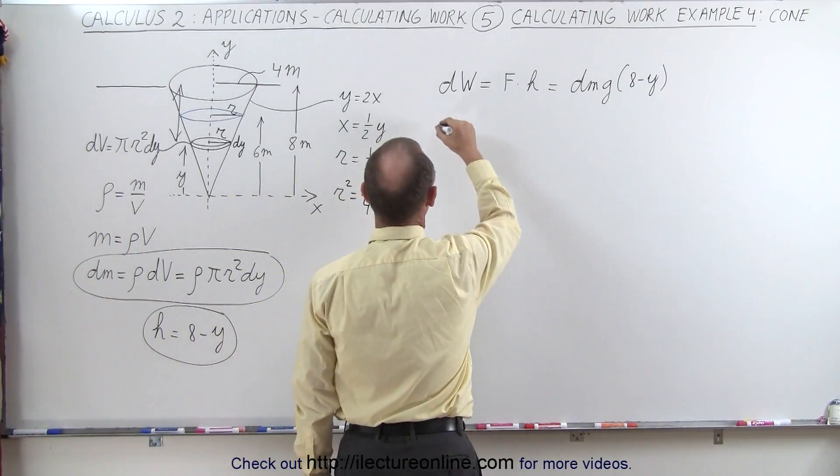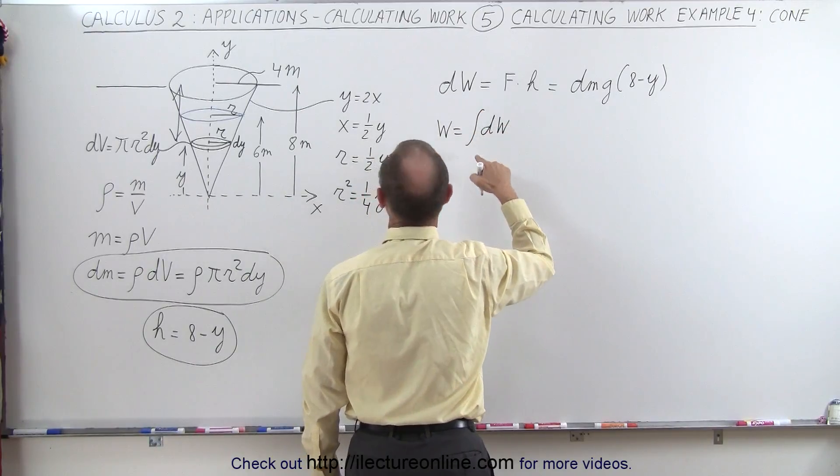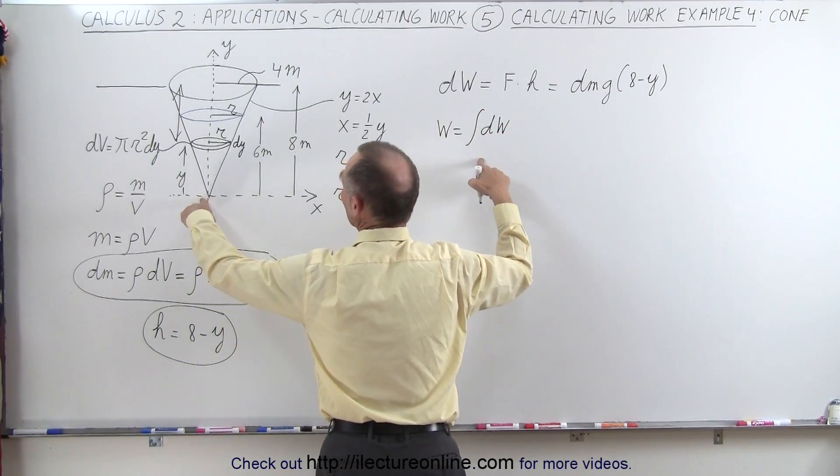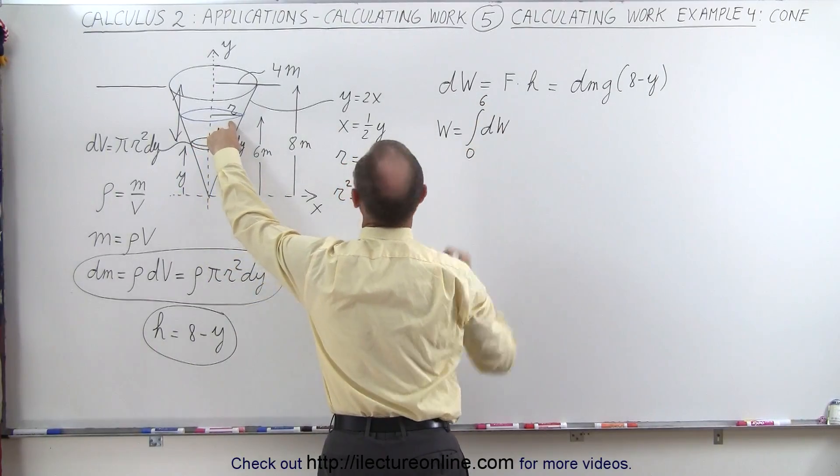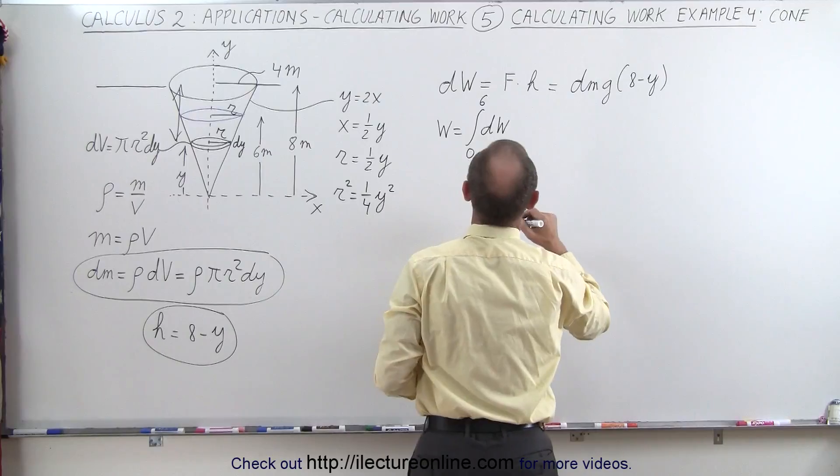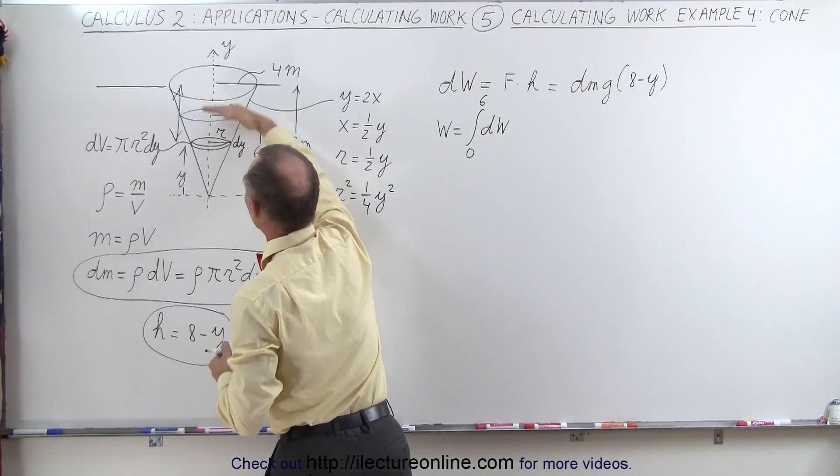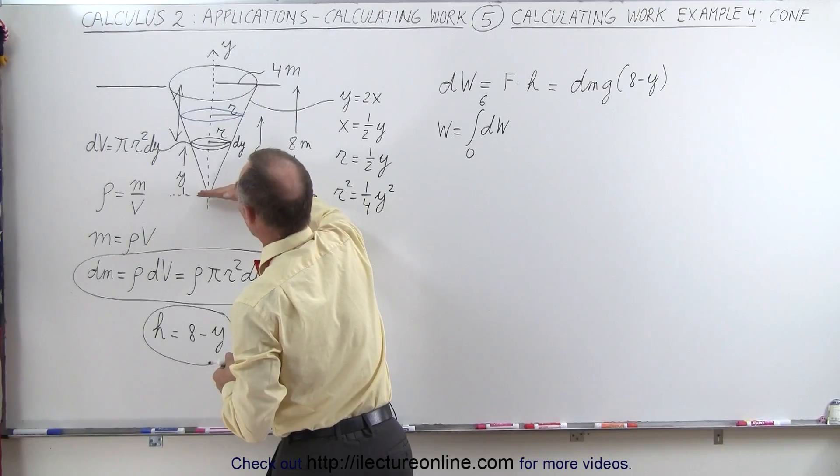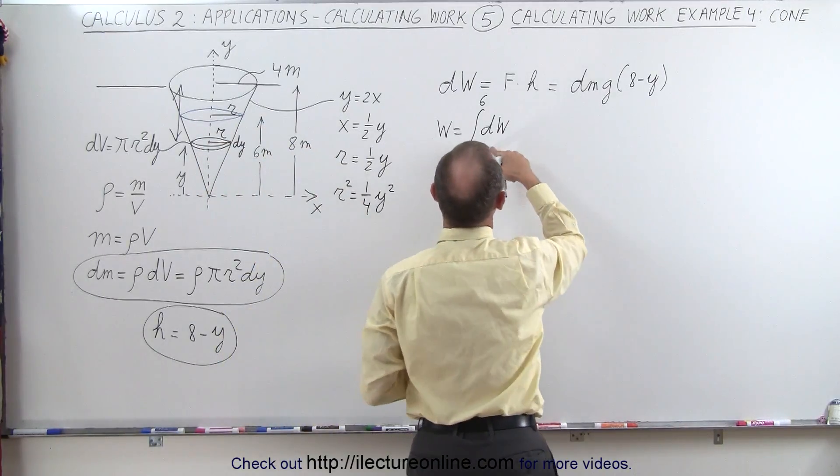So now we have the total work done is equal to the sum of all the little dws, and we're going to lift it from y equals 0 to y equals 6. So from 0 to 6, because the water is of course between those two heights. So we take all the water from y equals 0 all the way up to all the water when y equals 6 of dw.